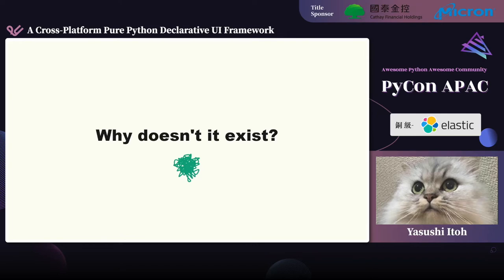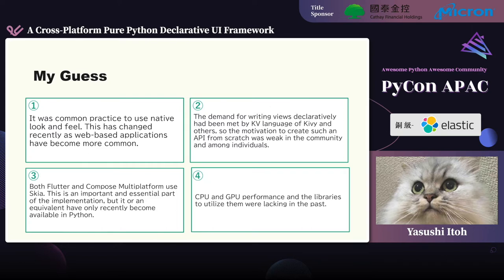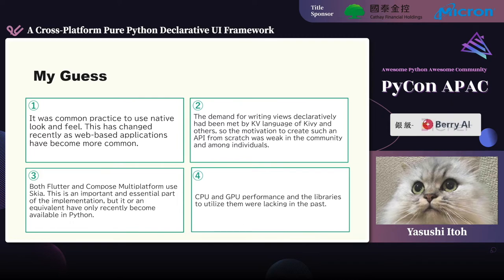Why doesn't it exist? I propose four reasons. First, it was common practice to use native look and feel, which has changed recently as web-based applications have become more common. Second, the demand for writing views declaratively has been met by Kivy's language and others, so motivation to create such an API from scratch was weak. Third, both Flutter and Compose Multiplatform use Skia, which has only recently become available in Python. Fourth, CPU and GPU performance and the libraries to utilize them were lacking in the past.